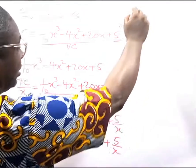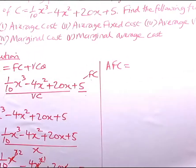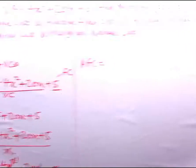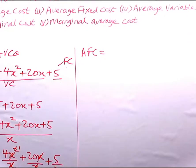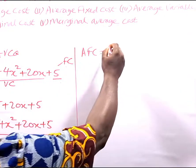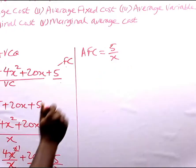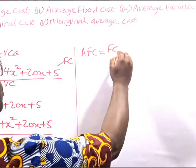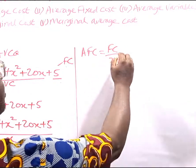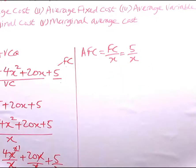Let's move on to the second part. We are told to find the average fixed cost. We know that our fixed cost in this function is 5. So the average fixed cost will be fixed cost divided by X, which gives us 5/X. That is our average fixed cost.